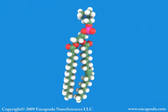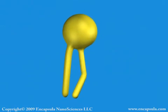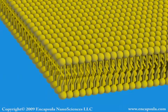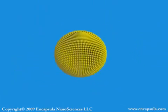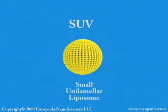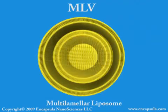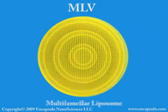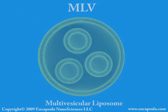Phospholipids are often drawn as a ball representing the head group with two tails attached representing the fatty acids. In an aqueous environment, phospholipids orient themselves into a thermodynamically stable structure called a bilayer. This flat sheet of lipid then curves into a geometric structure which has no edges — a sphere. SUVs range from 30 to 70 nanometers in diameter, while MLVs can be several microns in diameter. LUVs, or large unilamellar vesicles, range from 70 to 120 nanometers in diameter.